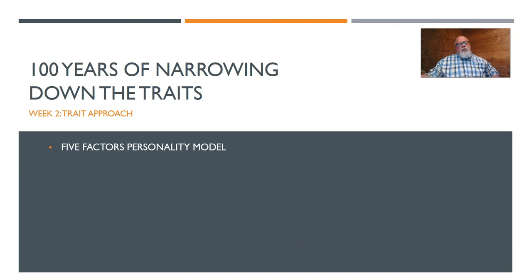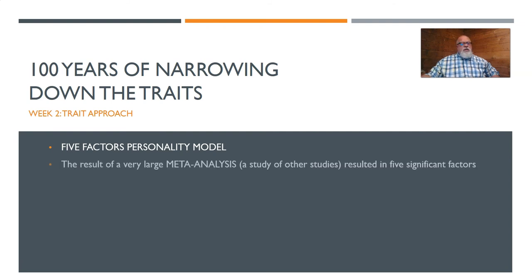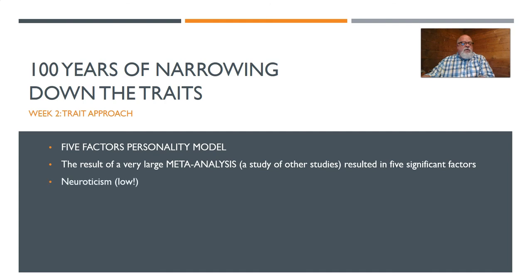The book also discusses another set of traits called the Five Factor Personality Model, the result of a large meta-analysis. A meta-analysis is a study of other studies — you go look at existing studies that may have been gathering data relevant to your question without that being their primary purpose. It's a useful way to gather a lot of data without waiting years to collect it yourself.